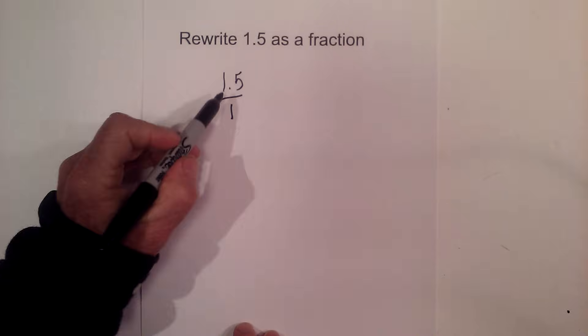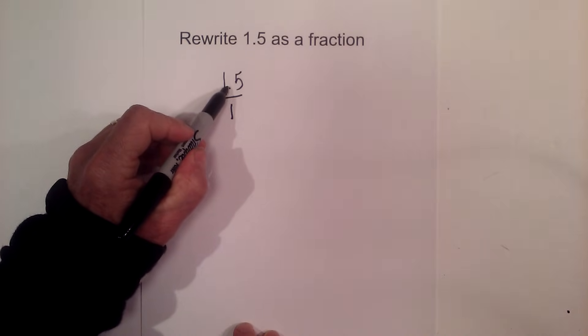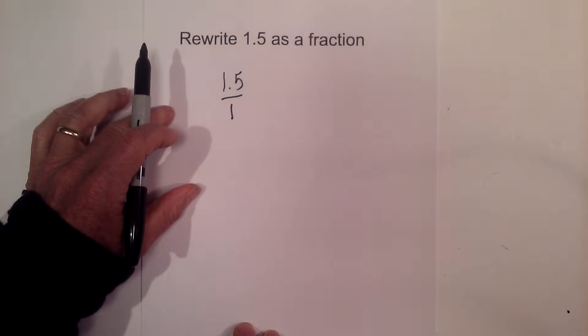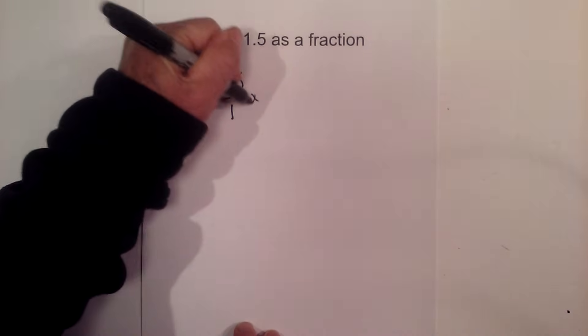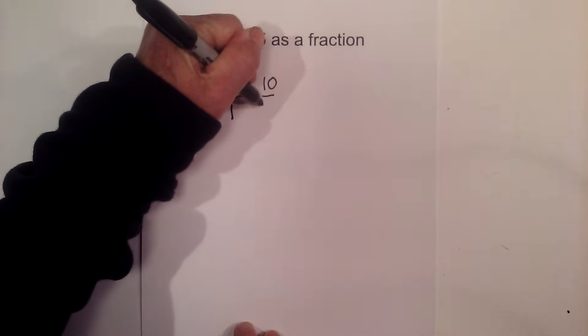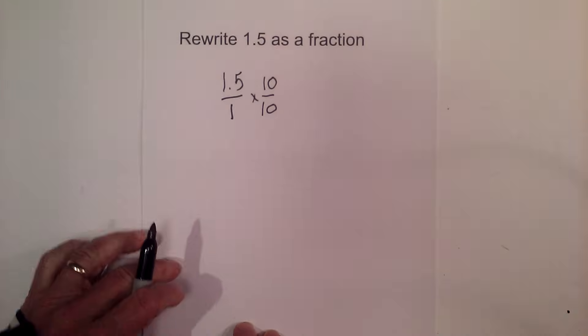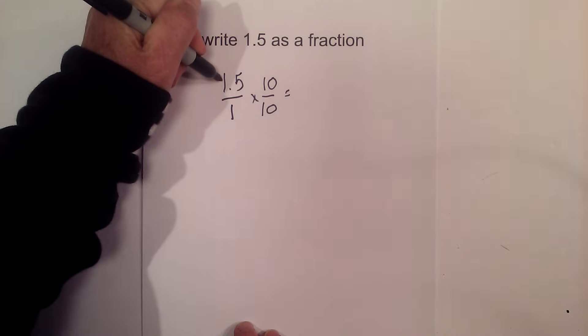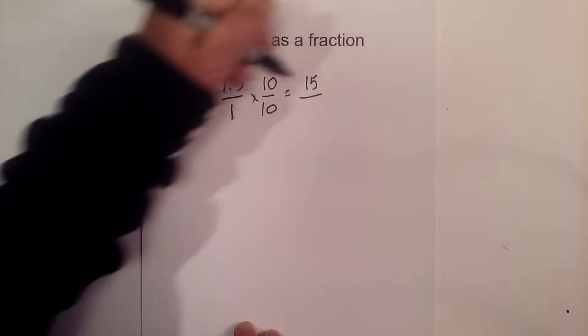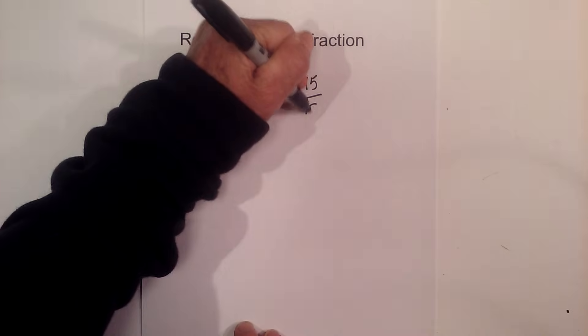Now what I would like to do is move the decimal to the far right. So I need to move it one place to the right. And we have ones and tens. So I can do that by multiplying numerator and denominator by 10. When I do that, that gives me 1.5 times 10 is 15, and 1 times 10 is 10.